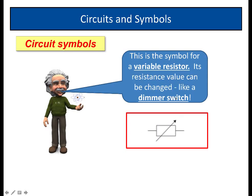You can go one stage further, and if you put an arrow like this through it, it becomes a symbol for a variable resistor. And this is a resistor that we can change the value of. If at home you've got a dimmer switch on your light, for example, that is a variable resistor.